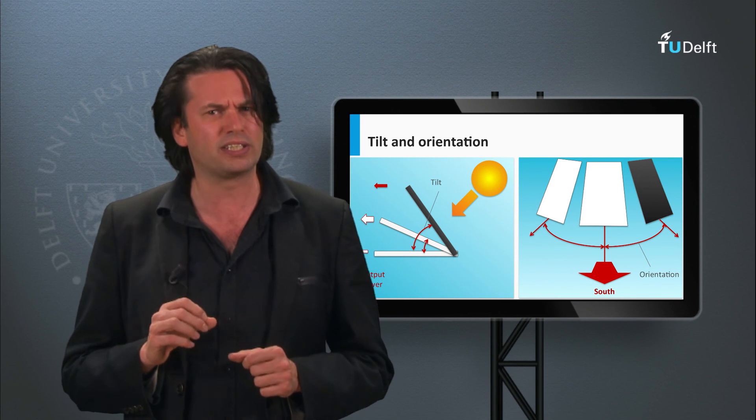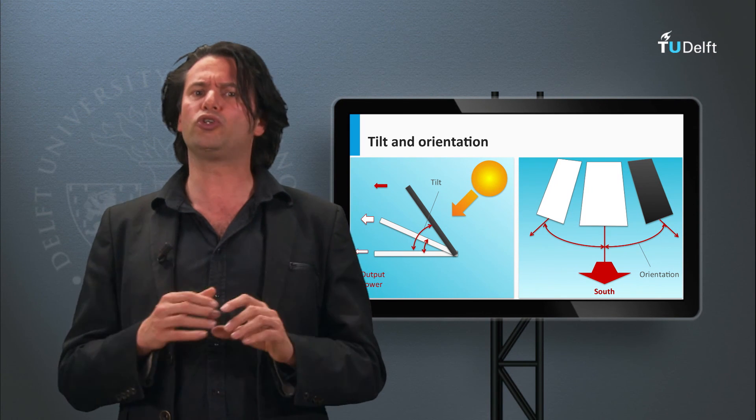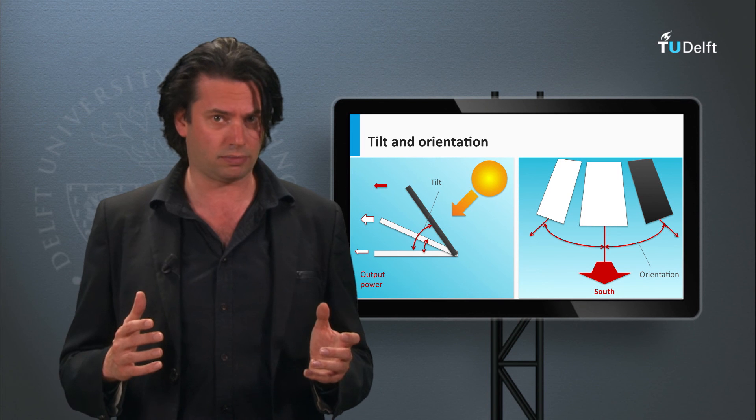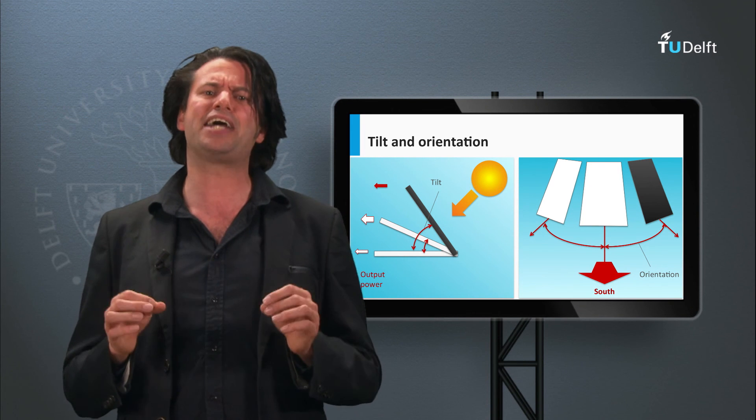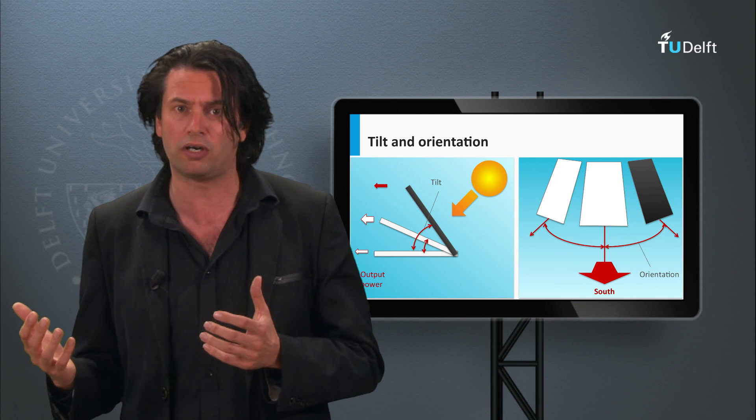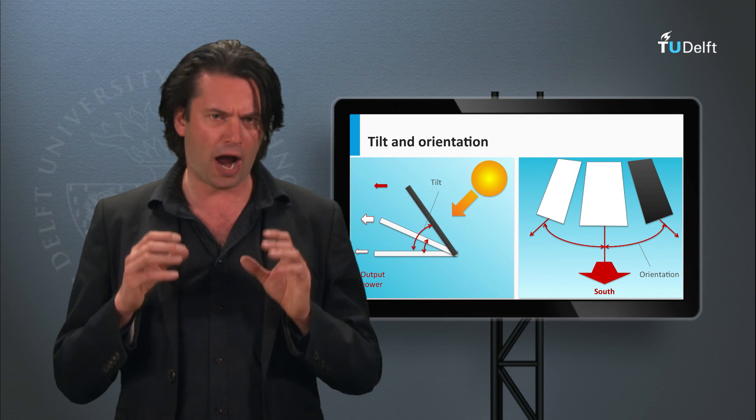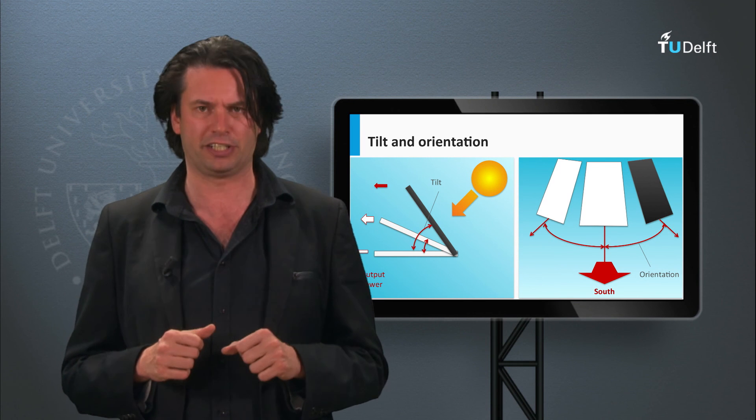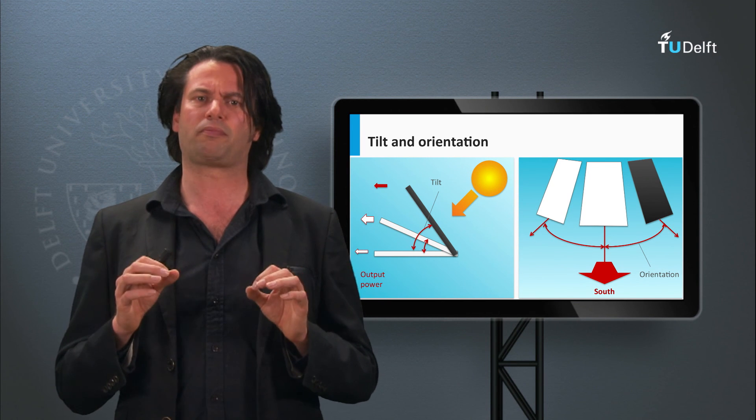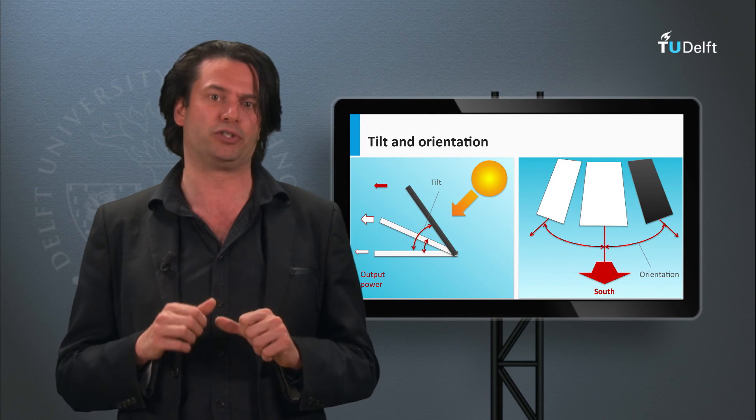It is also interesting to note that the optimized tilt could also be based on the seasons. That is, we could either use an angle that maximizes the PV yield in summer or in winter. This could be interesting for application-specific PV systems. Thus, we have seen the importance of the orientation and tilt for the PV module.